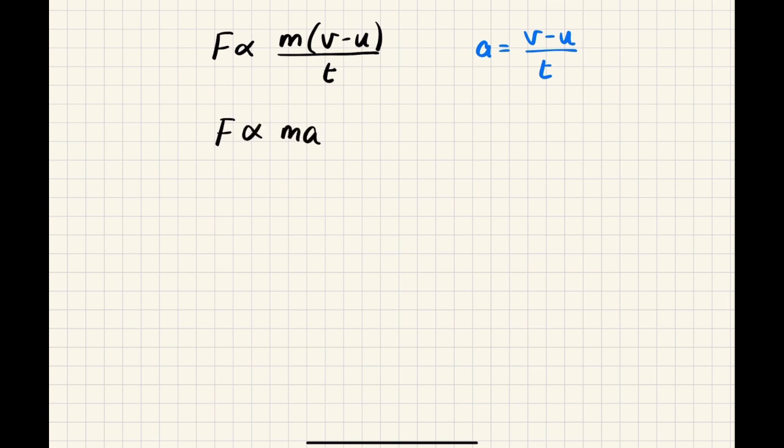Now, we're almost there at F equals MA, but we have to get rid of this proportional symbol. To do that in physics or maths, what we need to do is we need to add a constant. So the constant we're going to add is K, K for constant.